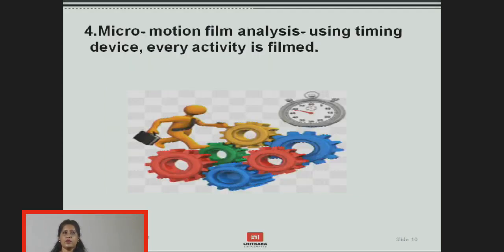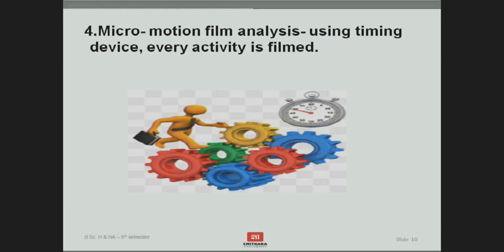The fourth technique is micromotion film analysis, in which every activity is filmed using a timing device. It is a detailed study especially of the finer movements of the hands and other parts of the body, and helps to analyze areas where changes need to be made to carry out tasks with the least expenditure of time and energy.